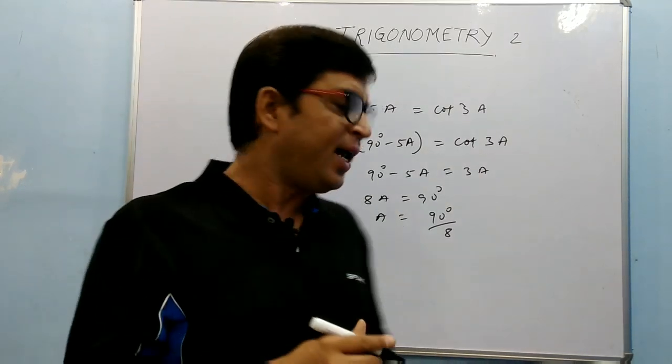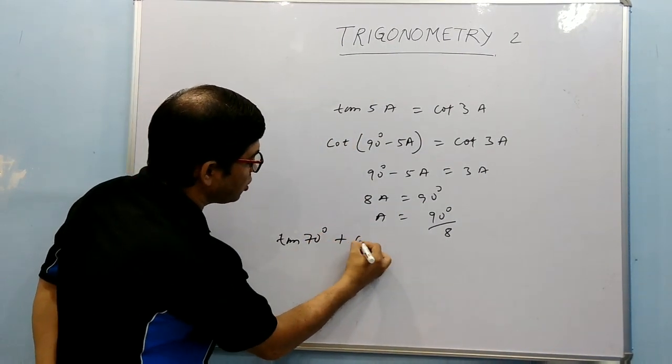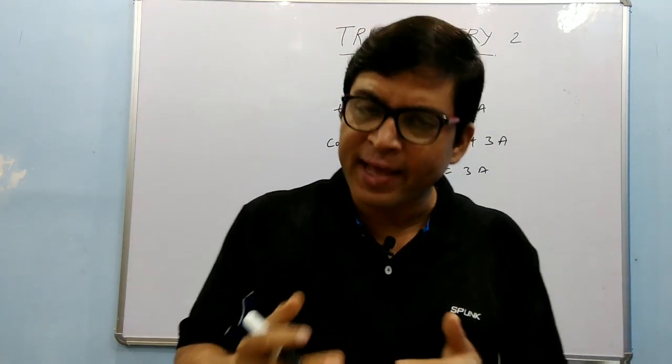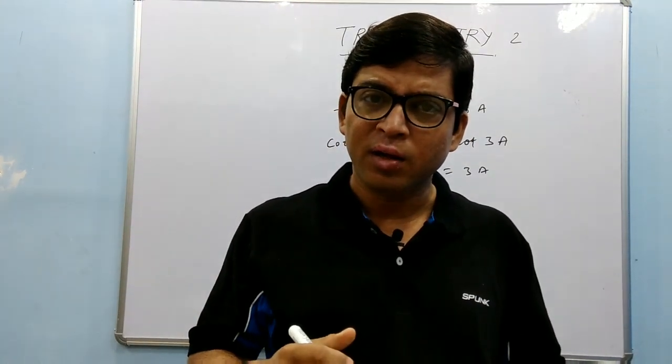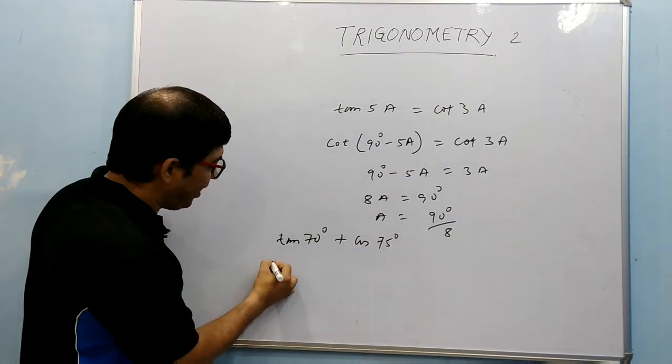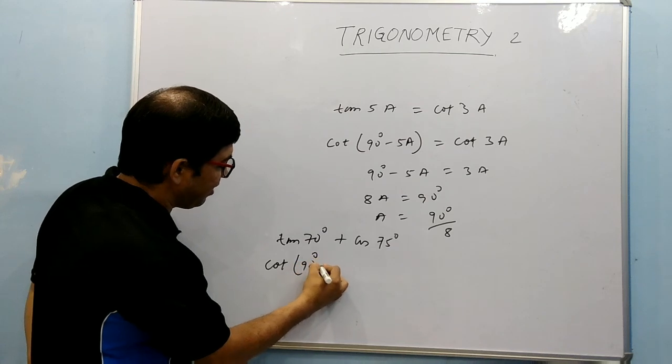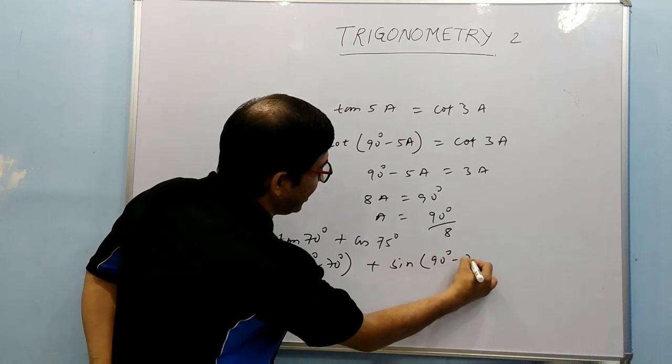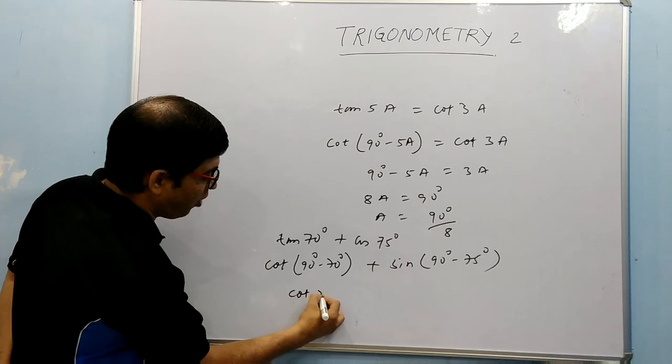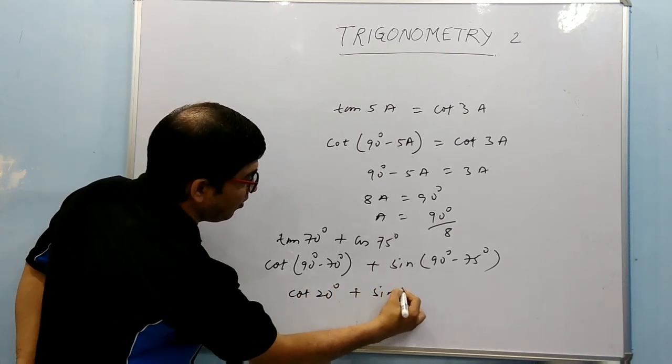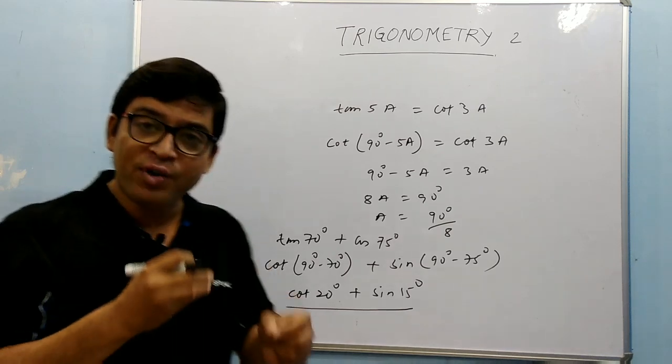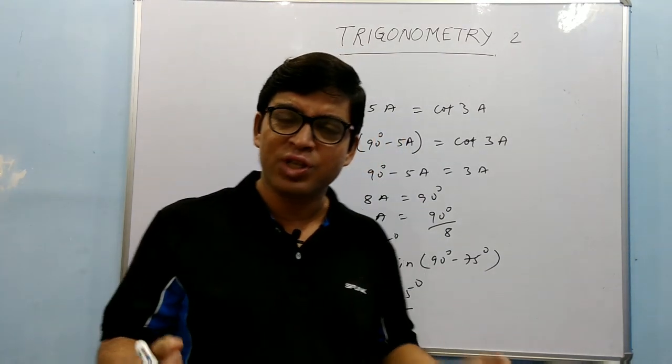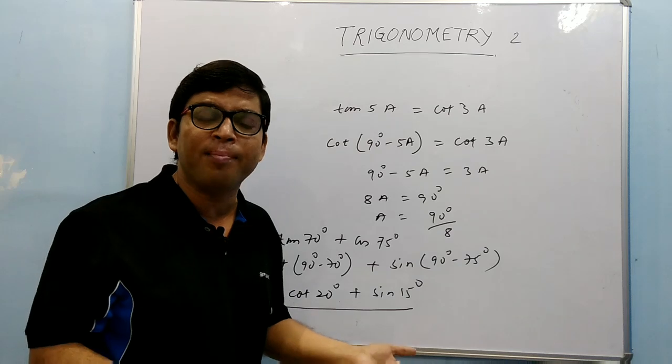Just see, it is given tan 70° + cos 75°. We convert these things in terms of angles less than 45°. What we have to do? Just very simple thing. We will write tan θ as cot(90° - 70°), and cos θ is sin(90° - θ), that is 75 here. So it is coming out to be cot 20° + sin 15°. We have converted the angles in less than 45° format. If it is being asked in the question, convert in that format, we did it. This simple application is needed.